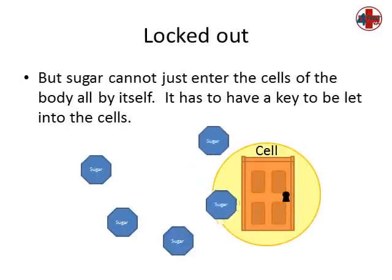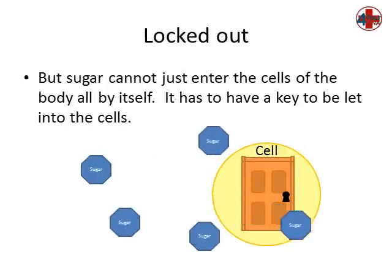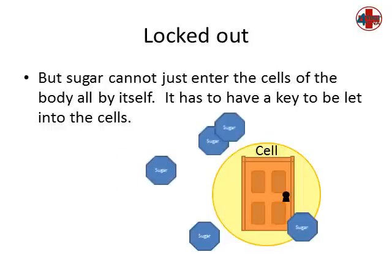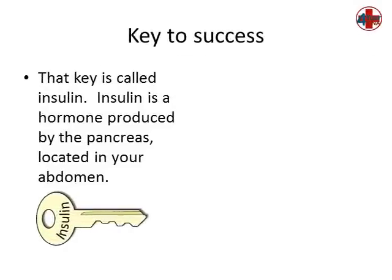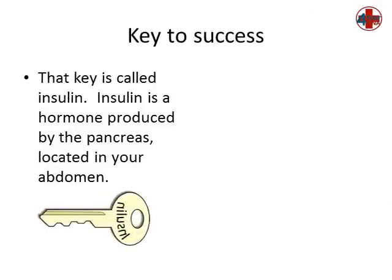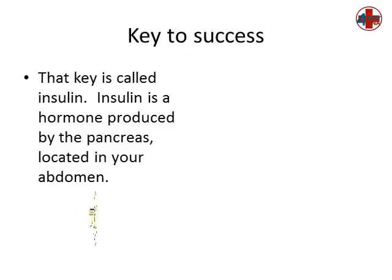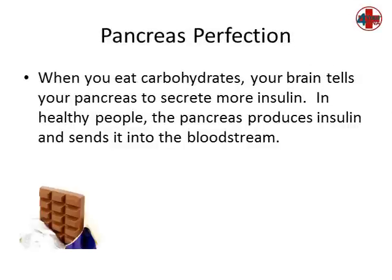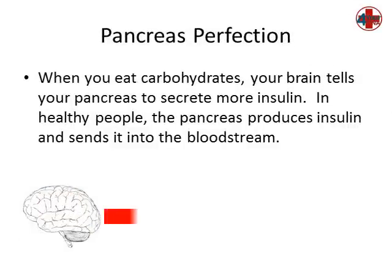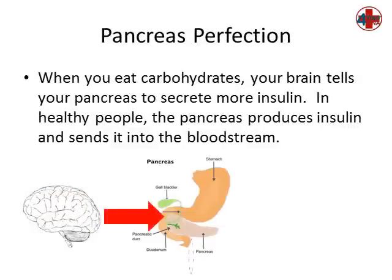But sugar cannot just enter the cells of the body all by itself. It has to have a key to be let into the cells. That key is called insulin. Insulin is a hormone produced by the pancreas located in your abdomen. When you eat carbohydrates, your brain tells your pancreas to secrete more insulin.